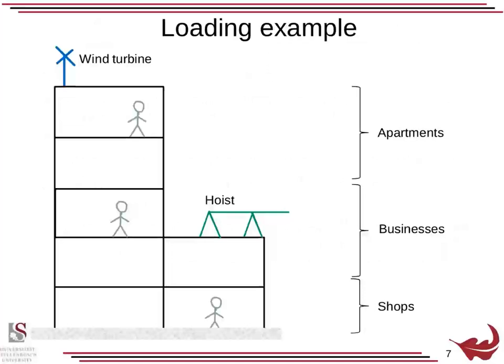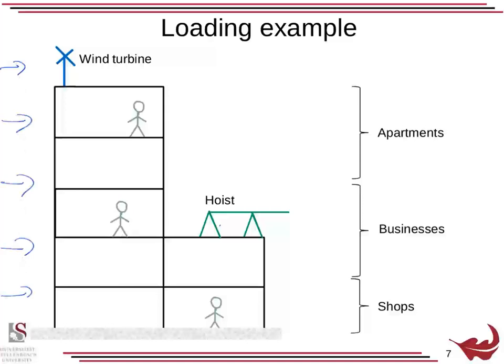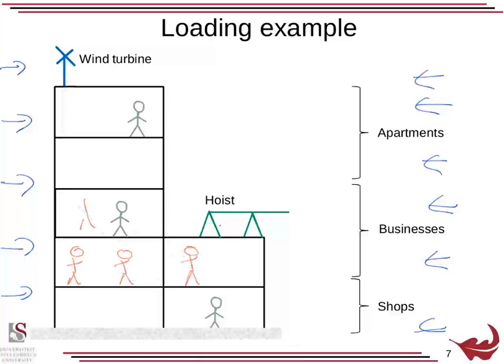Think about a building with apartments, businesses, shops, and a wind turbine on top. You can have wind load from one direction or another. You could have a grand opening of the shops with lots of people throughout the building, or a rebuild of the apartments where materials are packed into one room. We need to somehow approximate all of that — including a hoist lifting motors and gearboxes, or items into the businesses. We're going to design each one for the worst load in 50 or 100 years, but what's the chance of them all occurring at the same time?